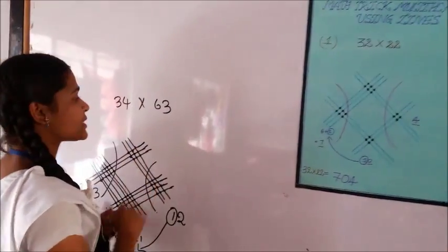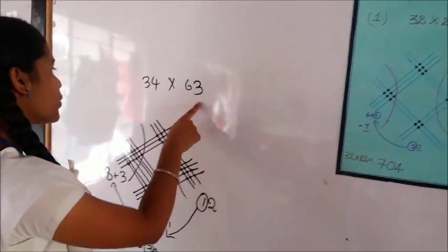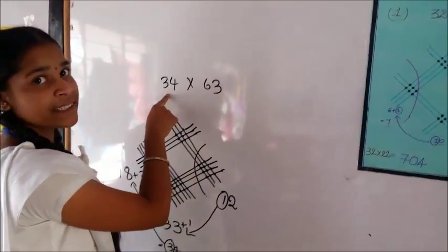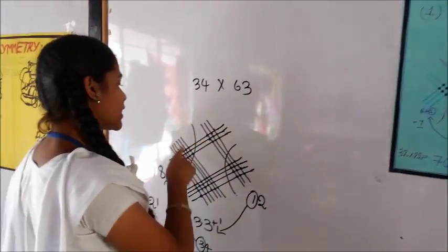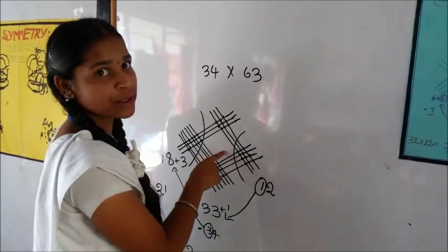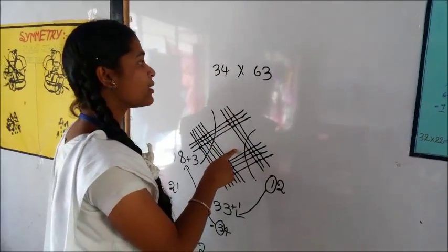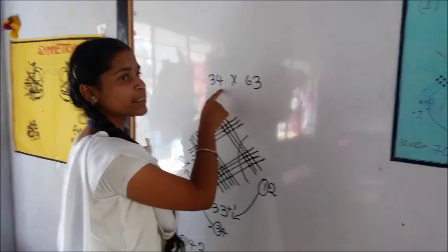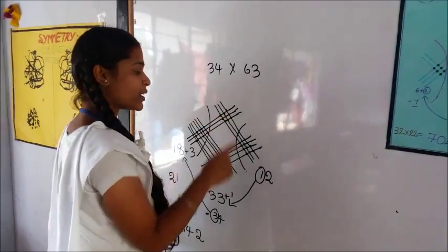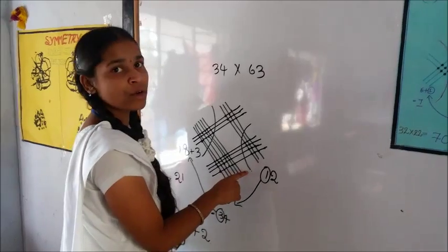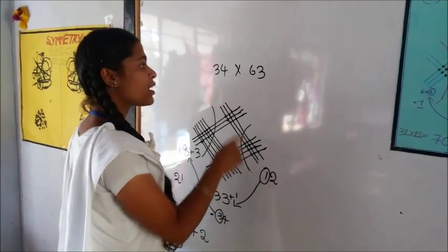For example, 34 and 63. The first digit is 3, so we draw 3 cross lines. Give some space for each of the numbers. The second digit is 4, so we draw again 4 cross lines.